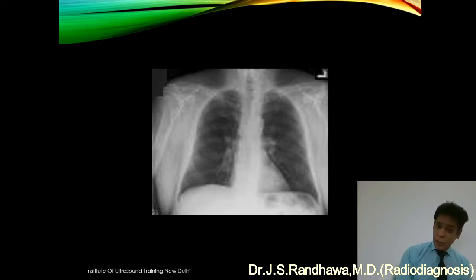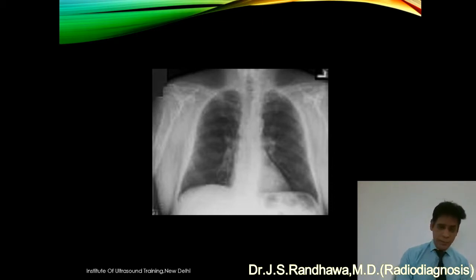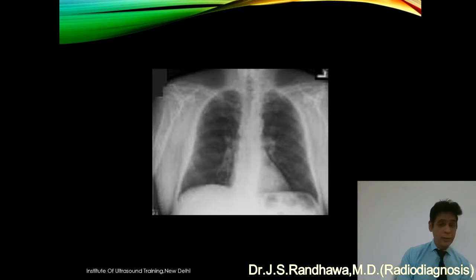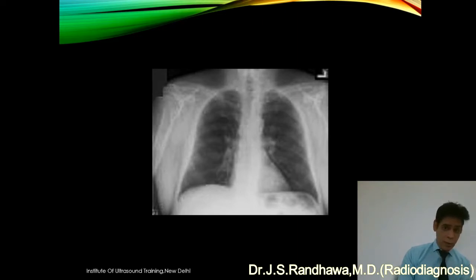Any fluid in contact with an abdominal viscera like liver, spine, bowel loops, gallbladder, or uterus — that is ascites. And if fluid is in contact with a collapsed lung, that is pleural effusion. So in case you can make out the lung area and see fluid around it, it is an effusion, and if you can make out an abdominal viscera, it is ascites.